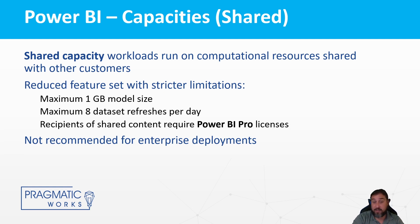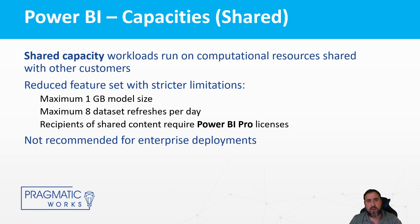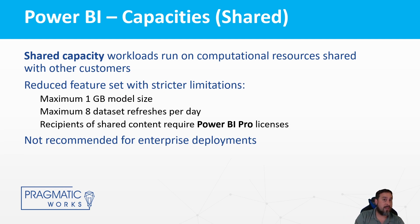In a shared capacity environment, any organization that hasn't explicitly purchased dedicated capacity has resources that are limited and shared amongst other organizations. You don't have access to see where those resources are being used. So that's why if you've set a refresh for 7am, when you look at the refresh history it might have started at 7:07, 7:37, or 7:22 — because at 7 o'clock those shared resources weren't available to process your request.